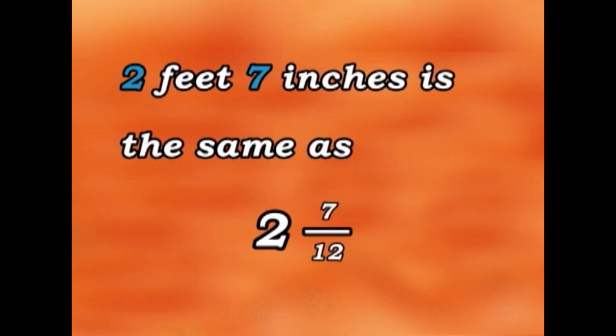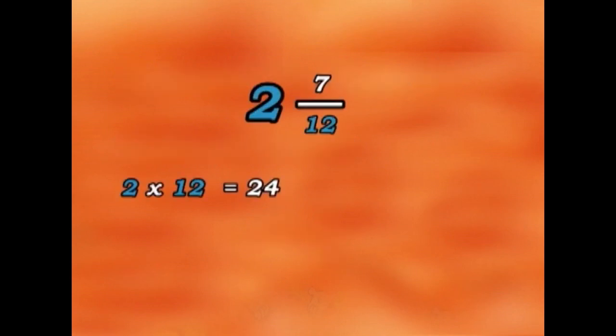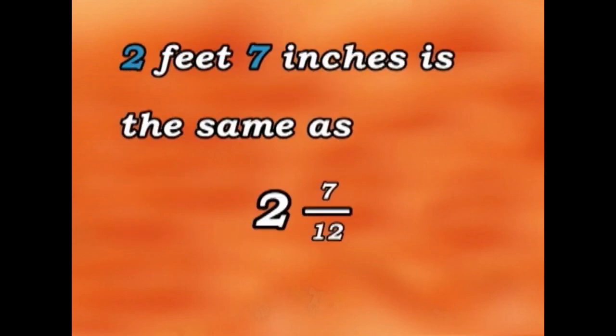Let's make that into twelfths. Two times twelve is twenty-four, plus seven is thirty-one. So two feet seven inches is the same as two and seven twelfths, is the same as thirty-one twelfths.